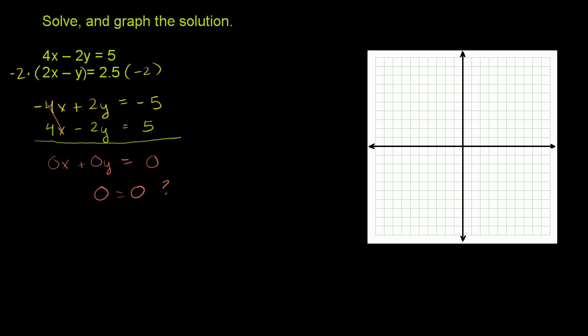So let me graph this top guy. I'll do it in blue. So right now it's in standard form. Let's put it in slope-intercept form. So we have 4x minus 2y is equal to 5. Let's subtract 4x from both sides. So then I'm left with negative 2y is equal to negative 4x plus 5. Now we can divide both sides by negative 2. And we are left with y is equal to positive 2x minus 2.5.